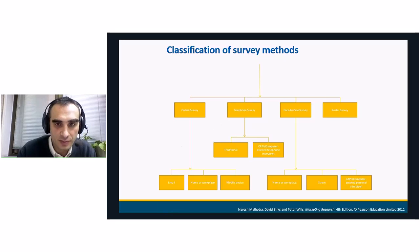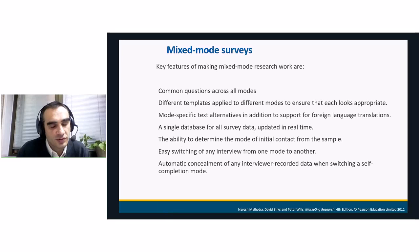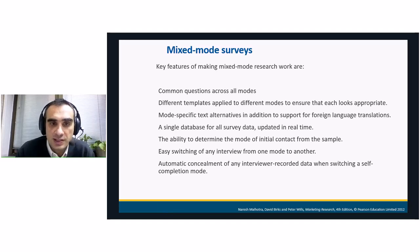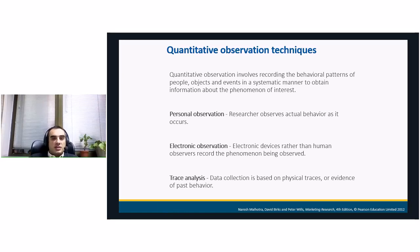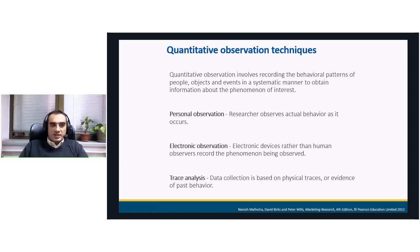Now we will continue with the mixed mode survey. This involves a combination of different methods, like face-to-face and computer-assisted telephone interviews. What is important is that common questions should be used across all modes, different templates should be used to ensure the look is appropriate, some mode-specific text alternatives should support the process, everything should go into one database, and there should be easy switching from one mode to another. Observation techniques include personal observation, electronic observation, and trace analysis.